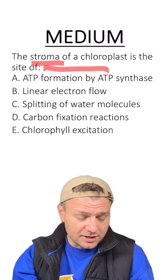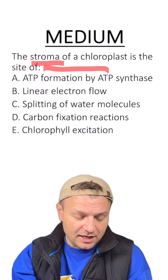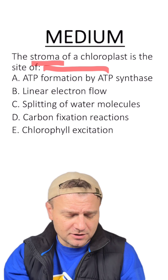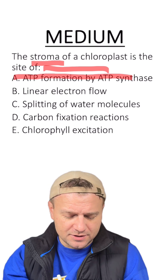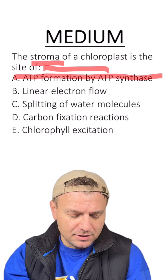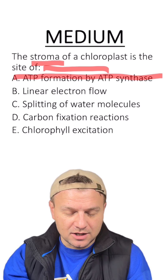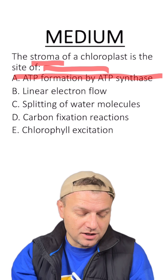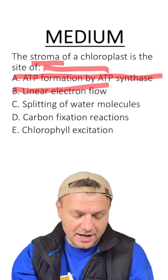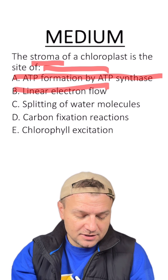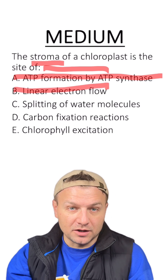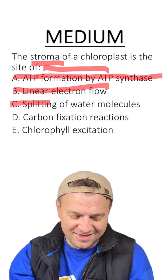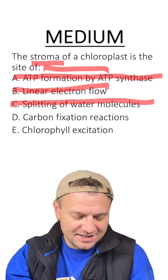Looking at our answers: A, ATP formation by ATP synthase — no, that's going to occur in the thylakoids, that's out. B, linear electron flow — that's going to occur along the thylakoid membrane, that's out. C, splitting of water molecules — occurs in the thylakoid, that's out.